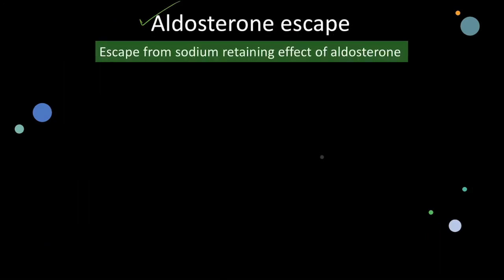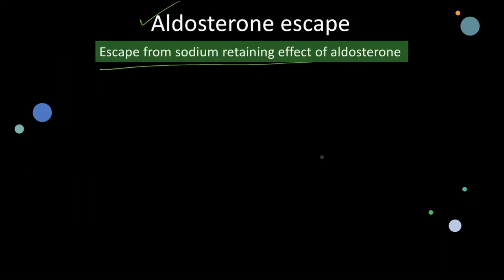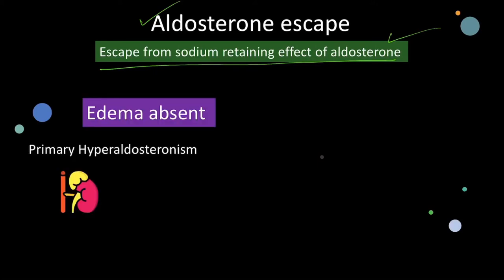So now we have established that aldosterone escape is the escape of the body from the sodium-retaining effects of aldosterone, and this compensatory mechanism seems to work only in primary hyperaldosteronism.